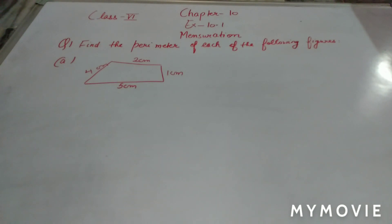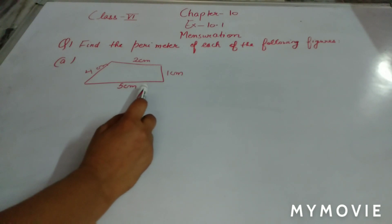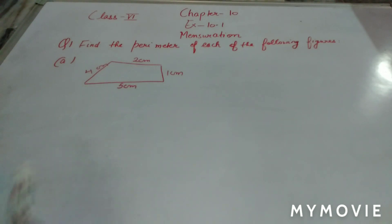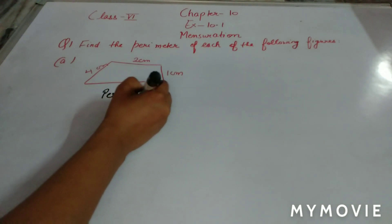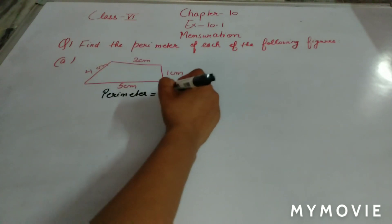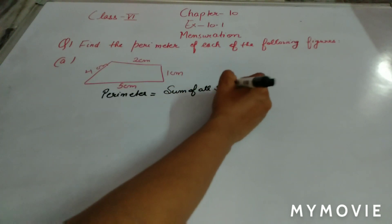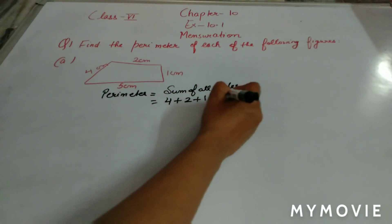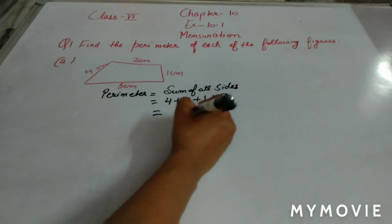The first part: this figure is given to you, and you have to find the perimeter. In this figure, all the sides are different. So the perimeter will be simply the sum of all the sides. Adding all sides: 4 plus 2 plus 1 plus 5 gives us a total of 12 cm.